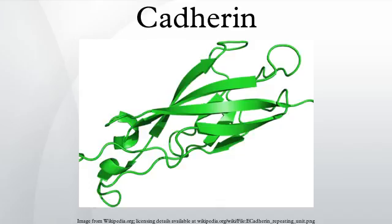Cadherins behave as both receptors and ligands for other molecules. During development, their behavior assists in properly positioning cells; they are responsible for the separation of the different tissue layers and for cellular migration. In the very early stages of development, E-cadherin is most greatly expressed.